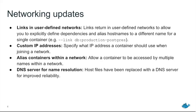Another thing we've added is the ability to set custom IP addresses. When you add a container to a network, or run a container passing a network to docker run, you can define what IP address that container should join the network as. So if your application expects things at certain IP addresses, you can now give containers static IP addresses. Also, when you start a container, it shows up in the network by its hostname.